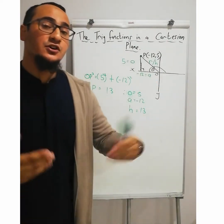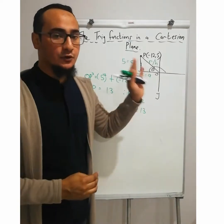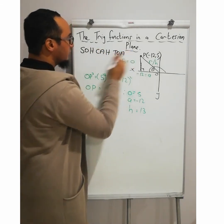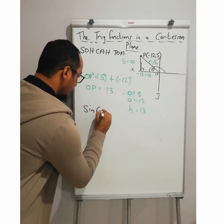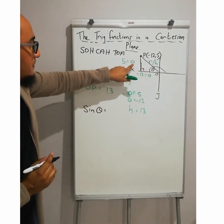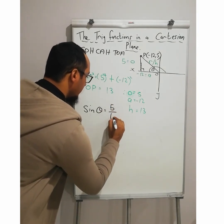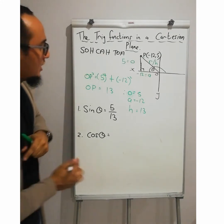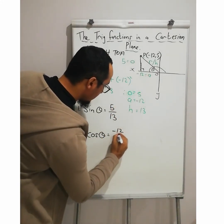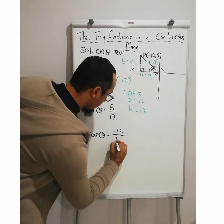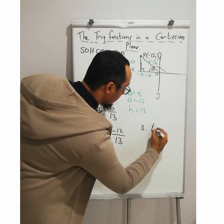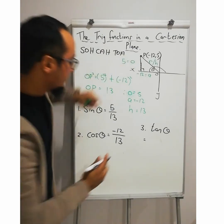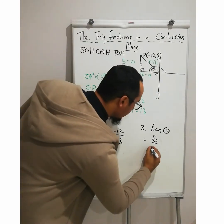Now if I were to ask you sine of that angle, cos of that angle, and tan of that angle, you should know how to use your SOHCAHTOA. First thing I write down: SOHCAHTOA — never enter an exam without this. So firstly, sine theta: sine is opposite over hypotenuse, and that is 5 over 13. If I were to ask you cos of theta: cos is adjacent over hypotenuse — my adjacent is negative 12 and my hypotenuse is 13, so cos theta equals negative 12 over 13. And tan of theta: tan is opposite over adjacent, so that is 5 over negative 12.